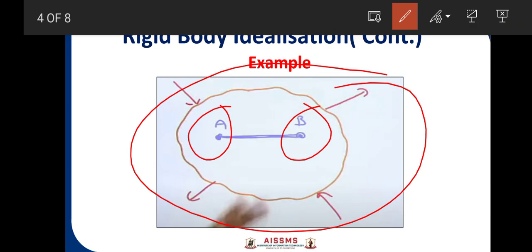This is why, because we will consider deformation in strength of material, but in engineering mechanics, we will not consider deformation. We will assume that the distance between these two points, distance between point A and point B will not change at all. The distance will be same, they will not move with respect to each other.